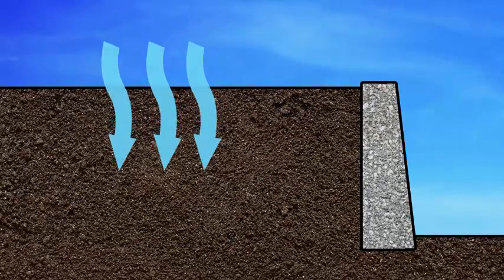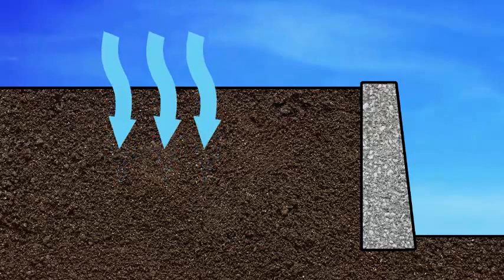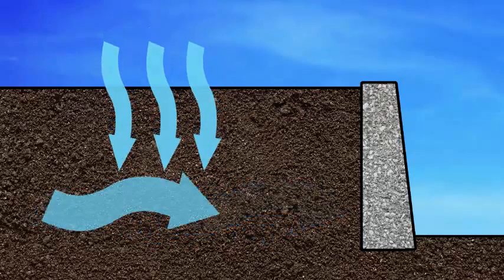All types of retaining wall systems aim to minimize the buildup of water pressure exerted upon the wall by the water contained within the soil. This pressure is called hydrostatic pressure.